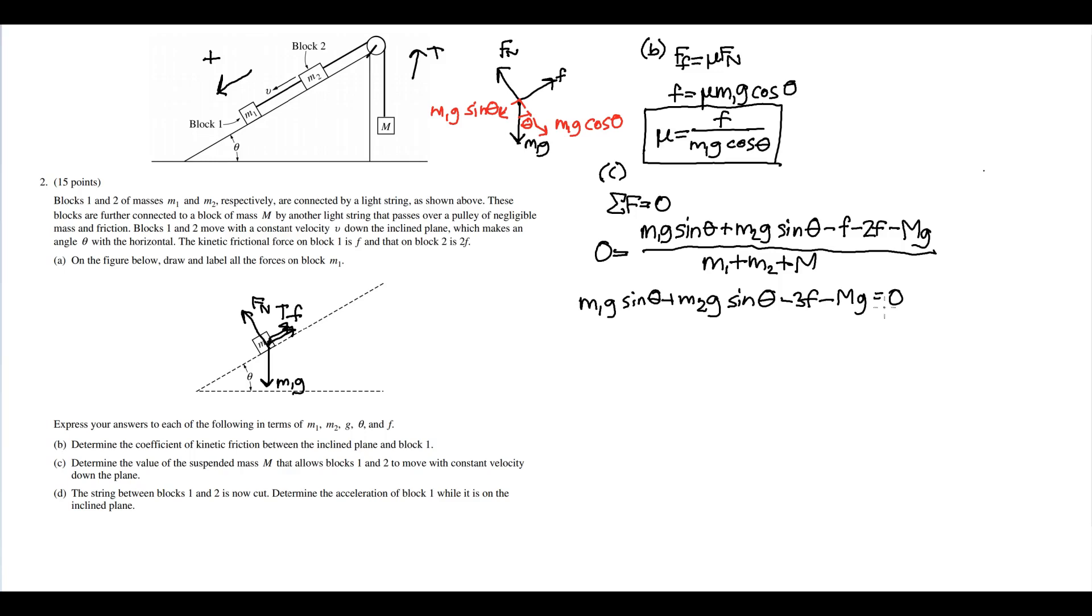So we're going to bring Mg to the right, so we have Mg equals m1 g sine theta plus m2 g sine theta minus three f. Divide both sides by g.